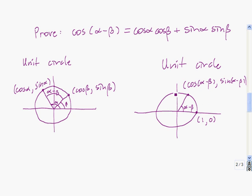So if we form two triangles — this triangle and this triangle — they're going to be congruent triangles, because these two lengths are both 1, as are these two lengths, and the angle joining them is exactly the same. So this triangle here is congruent to this triangle here, which means the length of the red segment in each diagram is exactly the same. That's the fact we're going to use to prove the identity. So what we need to do is find the length of the segment in each case, and we're going to use the distance formula to do that.